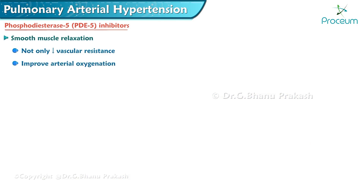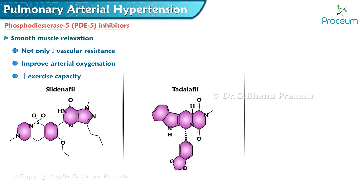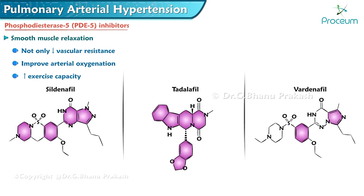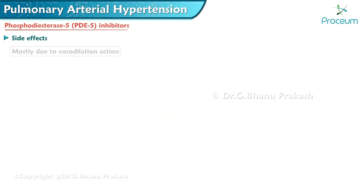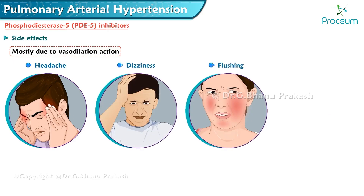PDE5 inhibitors not only decrease vascular resistance but also improve arterial oxygenation, increasing exercise capacity. Examples of selective phosphodiesterase 5 inhibitors include sildenafil, tadalafil, and vardenafil. Sildenafil is short-acting with thrice-a-day dosing, while tadalafil is long-acting with once-daily dosing. Side effects are mostly due to their vasodilation action: headache, dizziness, flushing, and epistaxis.